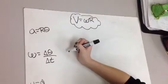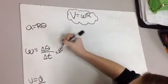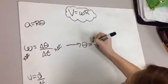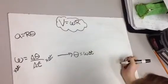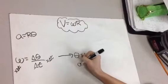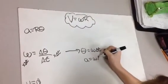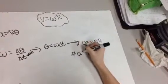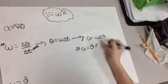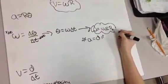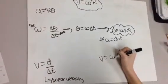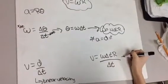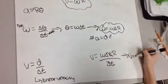To start, rearrange the angular velocity equation to find what theta equals. Multiply by delta t on both sides and it cancels out, so theta equals omega delta t. Knowing what theta is, we can now plug it into the arc length equation: A equals omega delta t times r. Since arc length equals distance, we plug A equals omega delta t r into the top of the linear velocity equation for d. The delta t terms then cancel out, leaving us with v equals omega r.